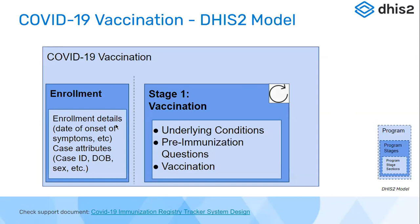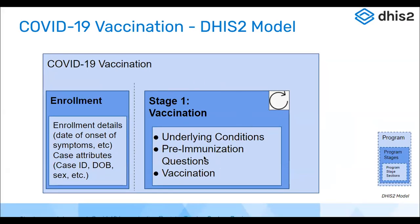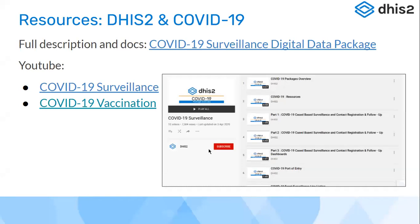In terms of the DHIS2 data model for vaccination, similar to COVID case registration, there was an enrollment capturing the main patient-identifiable information. Then there was data collection on underlying conditions, pre-immunization questions, and the vaccination itself. The vaccination stage was a repeatable stage, so a second stage was scheduled for the second dose. Program rules or algorithms were configured to carry forward required information from the first event to the second, so the person only needed to fill in the necessary details at the time of the second dose.